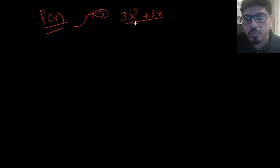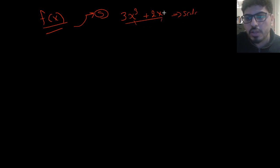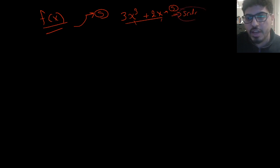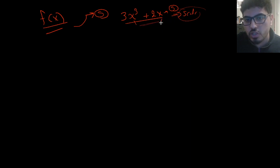This is a scalar-valued function because if you substitute the values of x into this function, you will end up with a scalar value. For example, if x is equal to 1, the function will evaluate to 5, which is a scalar value. A scalar-valued function is a function that returns a scalar no matter how much the value of x changes.